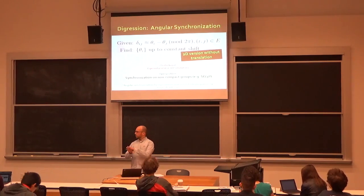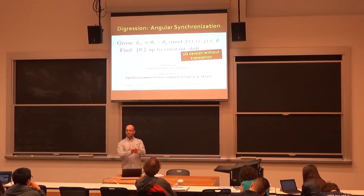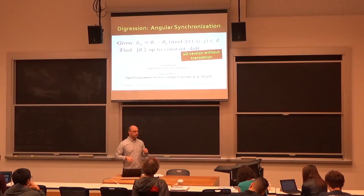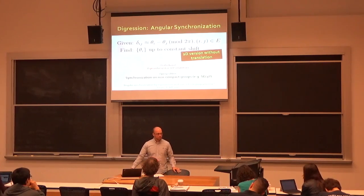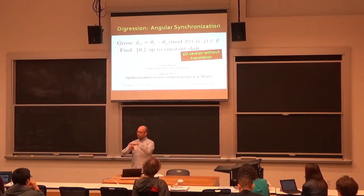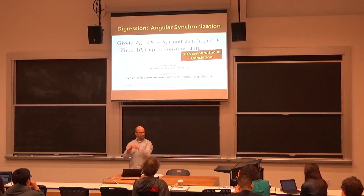The higher-level version of synchronization is: I have a bunch of estimates of the relationships between pairs of objects in a set, and I want to extract from that a global statement about the entire set. One thing to realize is that the synchronization problem doesn't have a unique answer — if I put everybody in the same coordinate frame and then rotated that coordinate frame, I haven't changed the alignment. The pairwise relationship is still conserved, which is what makes this problem hard.